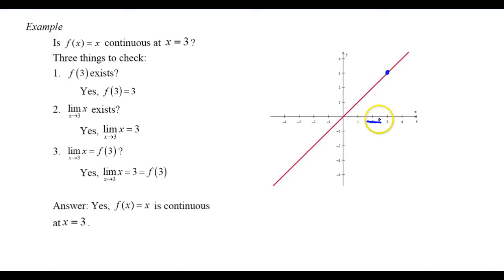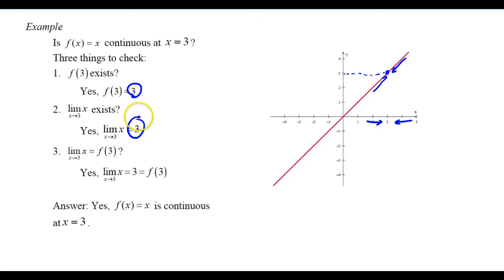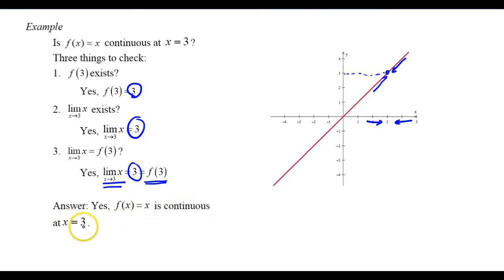Does the limit as x approaches 3 of x exist? Looking at the graph, as I get close to 3 on both sides, I get closer and closer to the same number: 3. So yes, the limit exists and equals 3. Then part three: does the limit as x approaches 3 of x equal f of 3? Yes — the function value equals the limit value and they're both 3. I've satisfied all three parts, so f of x equals x is continuous at x equals 3.